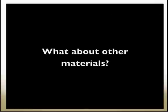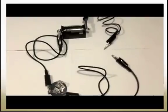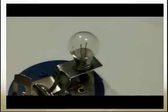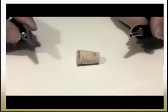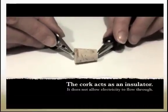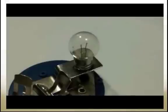When we bridge the connection using a conductor, the bulb will turn on. What about other materials? Once again, we start with an open circuit because our circuit is not complete. The bulb is off. When we bridge the connection using an insulator, the bulb stays off.